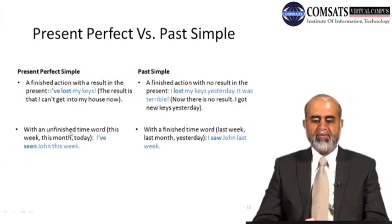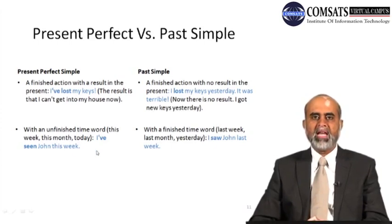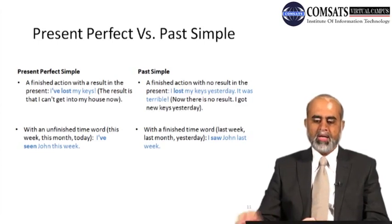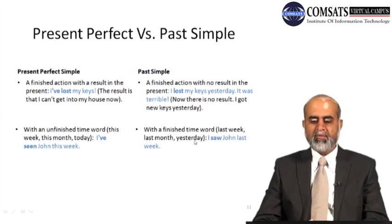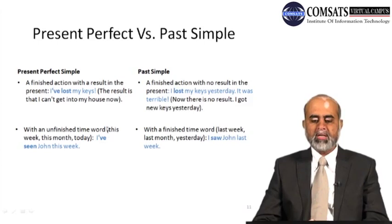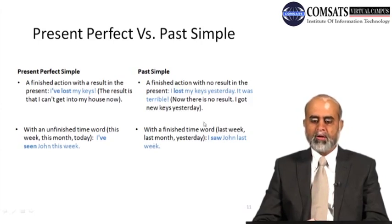We also use present perfect tense with an unfinished time word — something like this week, this month, today. For example: 'I've seen John this week,' 'I've seen John lately,' 'I've seen John recently.' But if you use a specific finished time word like last week, last month, or yesterday, use past simple: 'I saw John last week.' 'This week' is not a finished time word — this week is still going on, this month is still going on, today is still going on. Whereas last week, last month, and yesterday are over. For finished time words, use past simple; for unfinished time words, use present perfect.